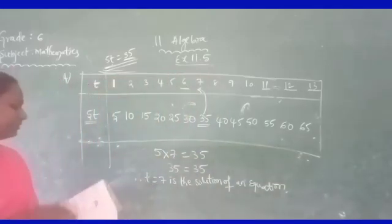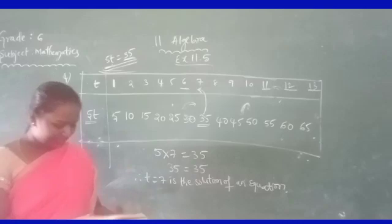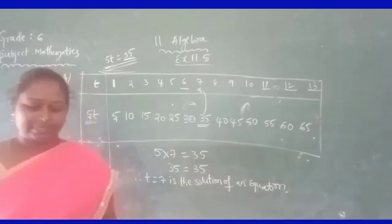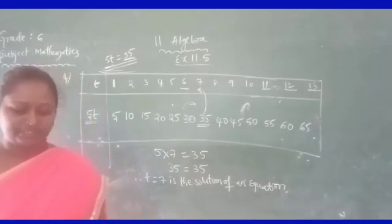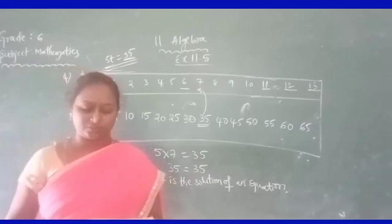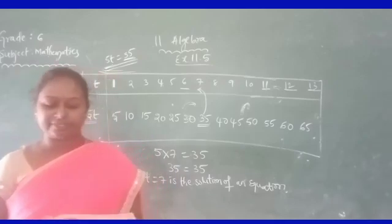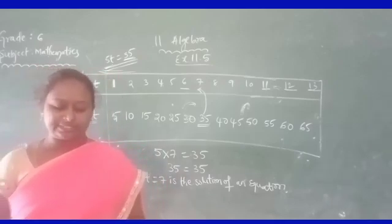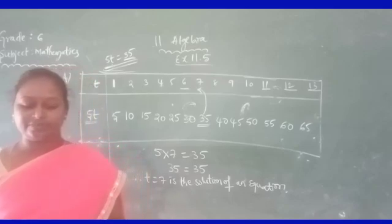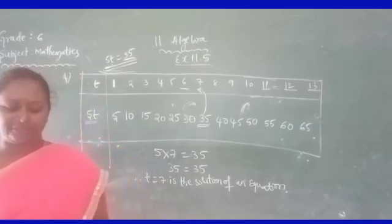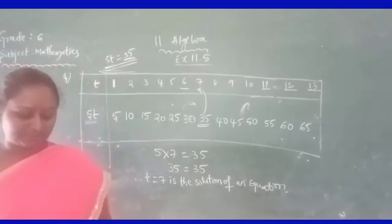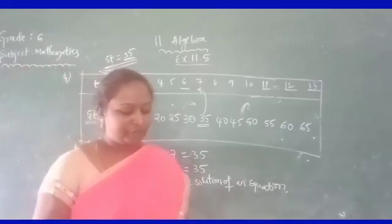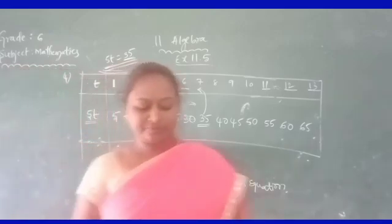Turn over to textbook page 242. Complete the following table and find the solution of the equation Z divided by 3 is equal to 4. Using the given values, we have to fill the table and find the solution.